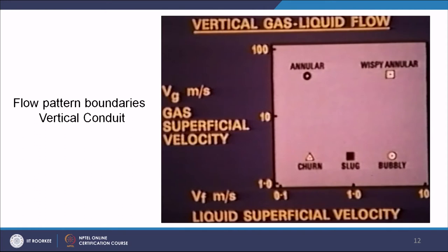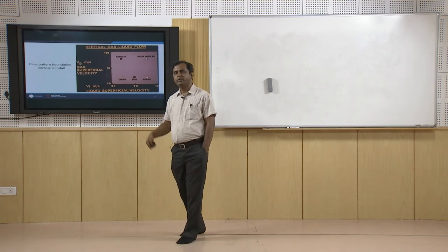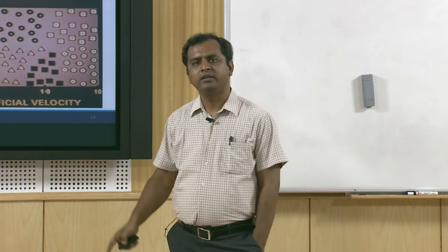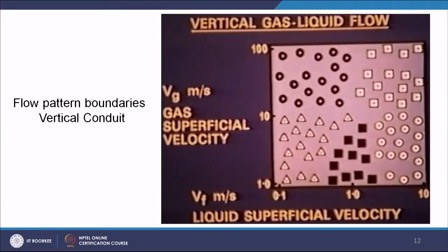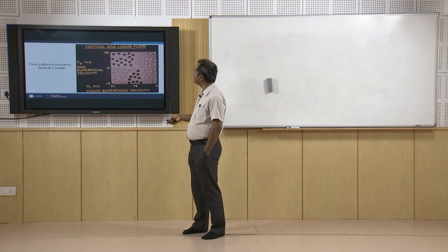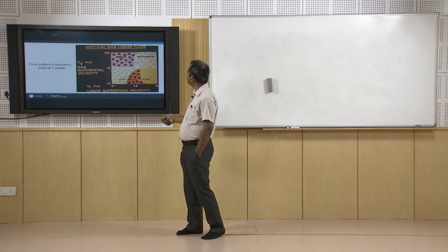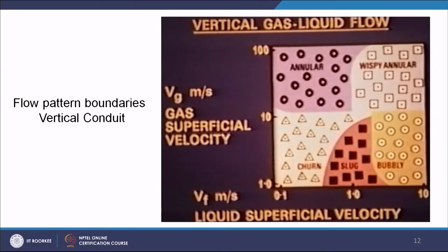By performing experiments at different liquid and gas superficial velocities, data points of different flow regime types can be gathered and plotted. These include bubbly, slug, annular, and wispy annular regions. This type of plot is called a flow pattern map. By creating boundaries between the flow regimes on this map, distinct domains for each flow pattern — bubbly, slug, churn, annular, and wispy annular — can be identified. These flow regime maps are very important to know a priori what type of flow pattern will be obtained.